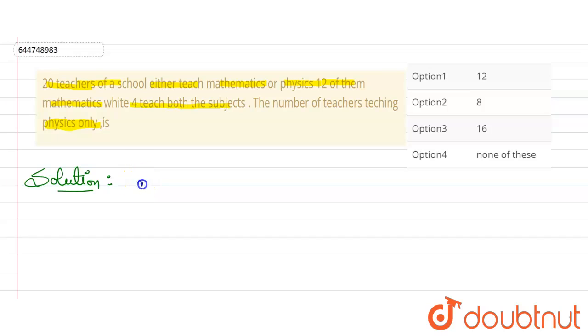So let's write the given data here. It is given that there are total 20 teachers and they only teach two types of subjects, so union of these two subjects, that is M union P, it will be equivalent to 20.